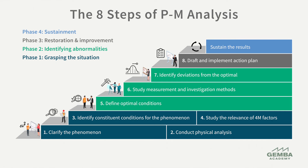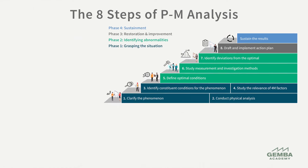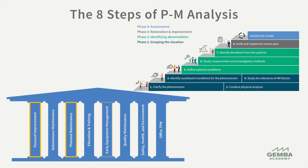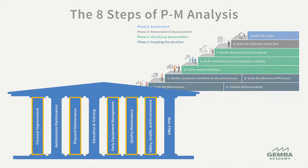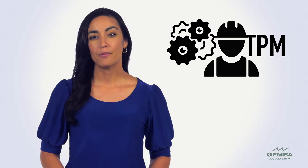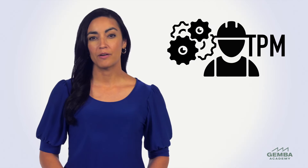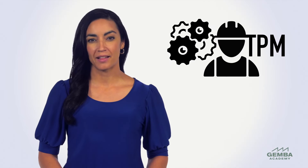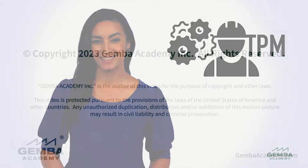P-M analysis is a rigorous process that takes the guesswork out of root cause investigations. It allows us to solve problems with complex causal chains that we often run into while improving equipment performance. That wraps up our review of P-M analysis. We'll see you soon.